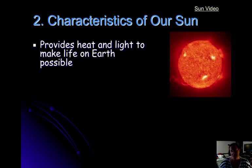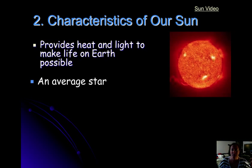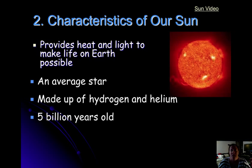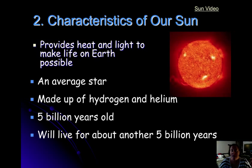Our sun provides all the heat and light we need to make life possible on Earth. It's just a very average star — average temperature, average size, everything about it is very average. It's made up of the two main gases, hydrogen and helium, and it's about 5 billion years old, the same age as our Earth. It's about halfway through its life cycle, so it's going to live for about another 5 billion years.